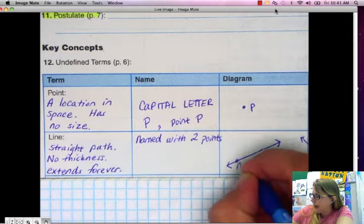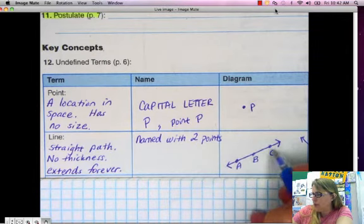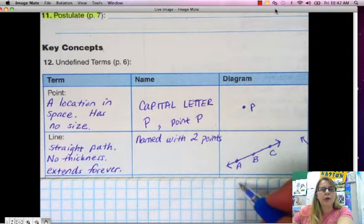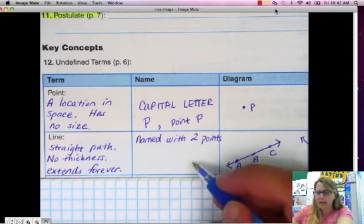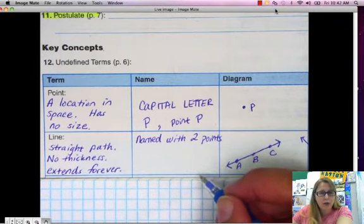Now lines are named with two points. Now sometimes usually you're going to have more than two points on the line. So for example you'll have like A, B, and C. These are three points on the line. So which two points do you choose when you name the line? It doesn't matter. It's completely up to you. In fact you can have it in any order you want.